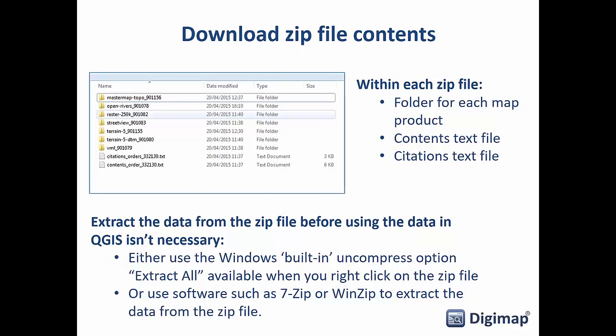When you get the data from data download it comes in a zip folder, with a folder for the mapping products you've selected, a contents text file, and a citations text file. So if you're using this in your research, paper, or thesis, you have a ready-made citation to drop into your reference list. It's best to extract the data from the zip file before using it, though it's not necessary — QGIS will read zip files as normal folders — but it's a good idea in case the zip file gets corrupted.